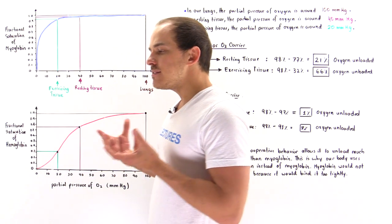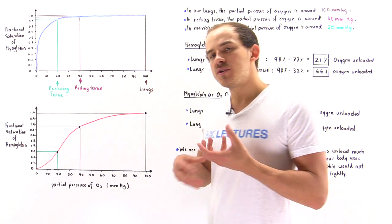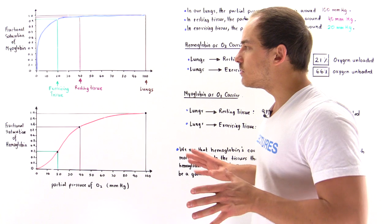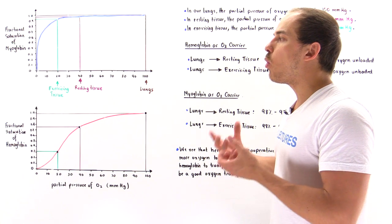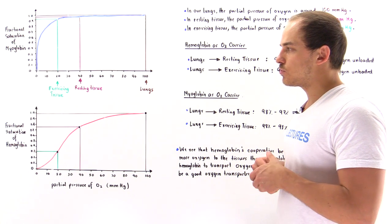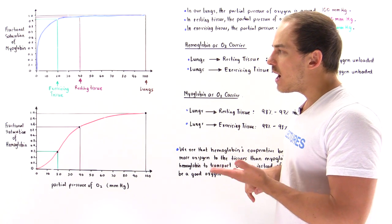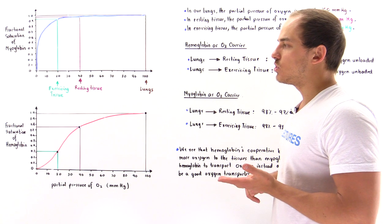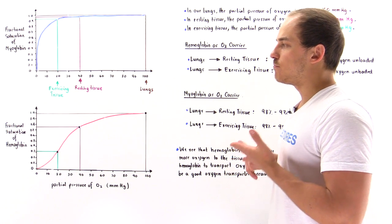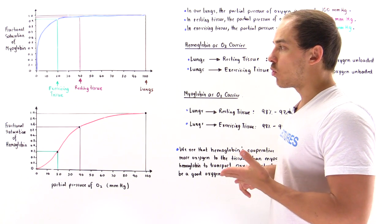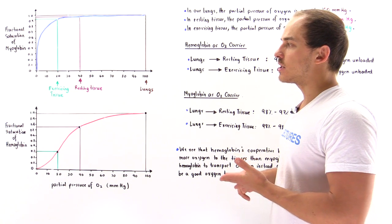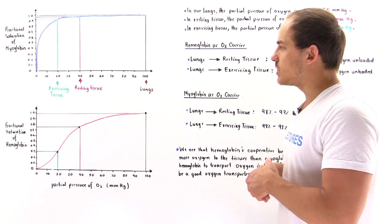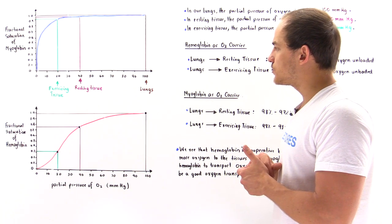That discussion was a more qualitative approach. Now let's take a look at a more quantitative approach as to why our body actually uses hemoglobin instead of myoglobin as the transporter and carrier of oxygen from the lungs to the tissues of our body.